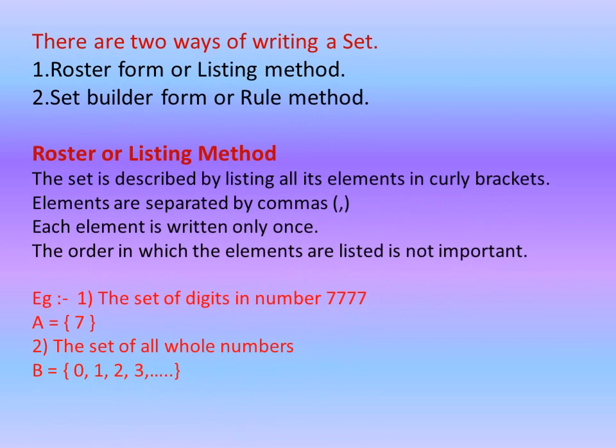There are two ways of writing a set. First, roster form or listing method. Second, set builder form or rule method. In roster or listing method, the set is described by listing all its elements in curly brackets. Elements are separated by commas. Each element is written only once. The order in which elements are listed is not important.